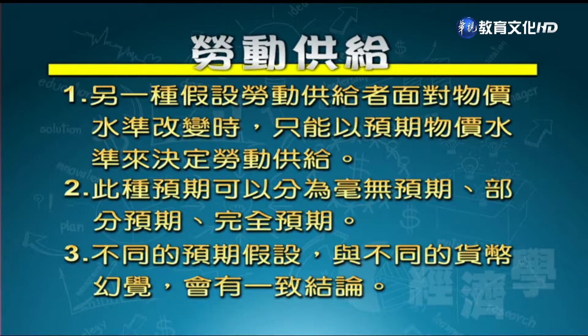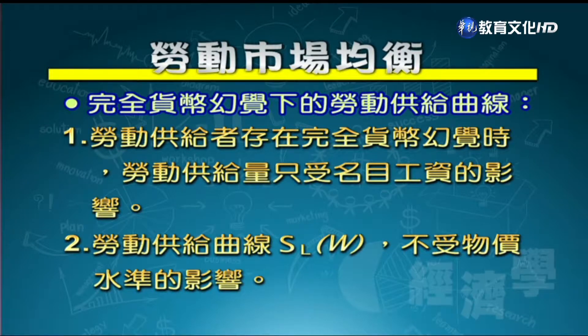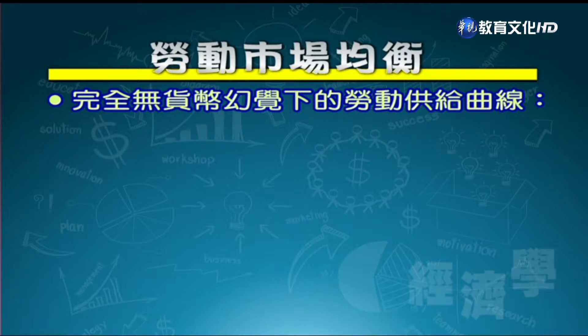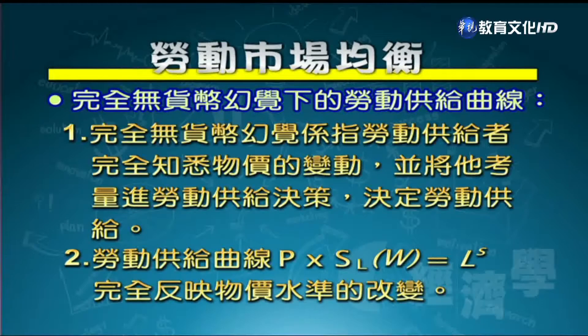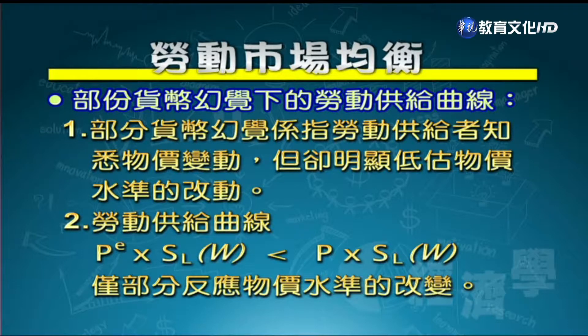不管是货币幻觉的说法还是预期物价水准的说法，最后他们都会有一致的结论。劳动供给者对物价变动的反应大概分为三大类：一是完全不动（完全货币幻觉）；二是完全知道价格改变（完全没有货币幻觉）；三是介于两者之间，知道物价在改变但不知道变化多大（部分货币幻觉）。